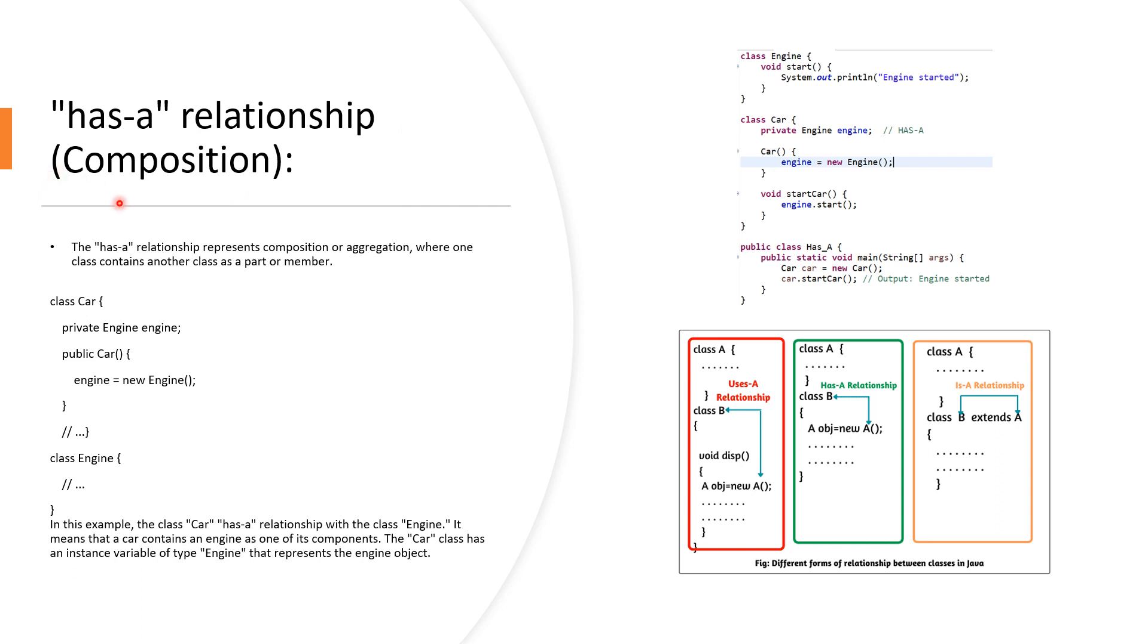The interviewer may ask, what is composition or what is the has-a relationship? The has-a relationship is established through composition. It means that one class contains an object of another class as part of its state.